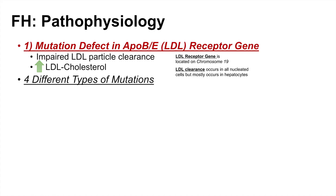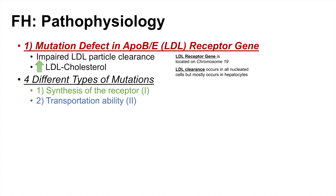There are four different types of mutations in the LDL receptor gene. Class 1 is a mutation in the synthesis of the receptor — simply fewer receptors are made to take up LDL. Class 2 is a transportation mutation — receptors are present but unable to transport the LDL cargo into the cell. Class 3 is a binding mutation — LDL is unable to bind to the receptor.